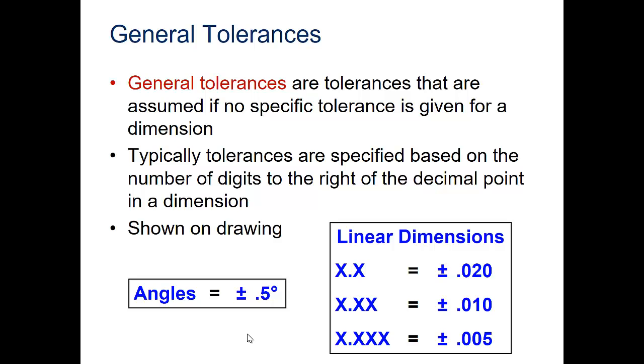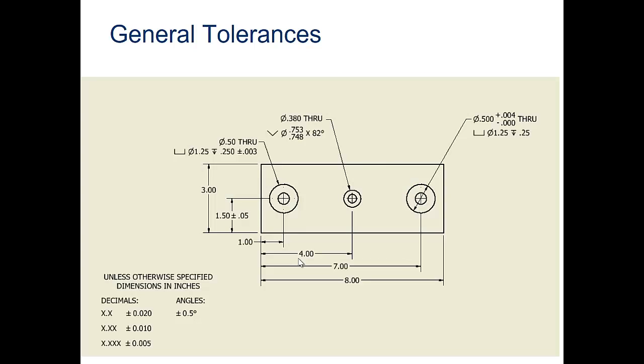General tolerances are tolerances that are assumed if no specific tolerance is given for a dimension. If you don't see any dimensions called out on the actual dimension itself, on the page somewhere you'll see boxes like these two for angles and linear dimensions. Typically tolerances are specified based on the number of digits to the right of the decimal point in a dimension, and they are shown on the drawing.